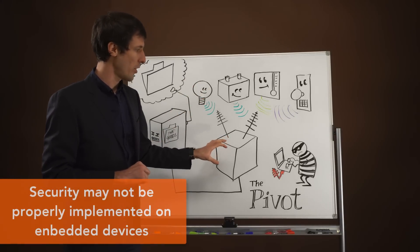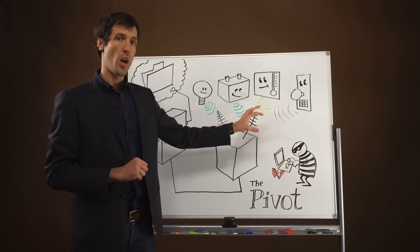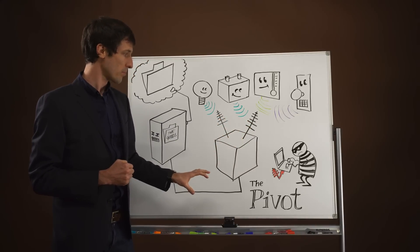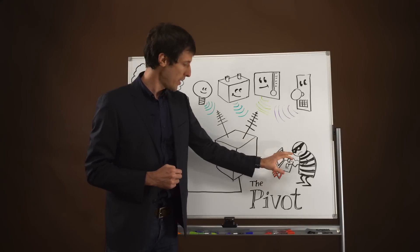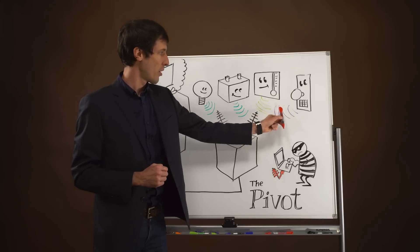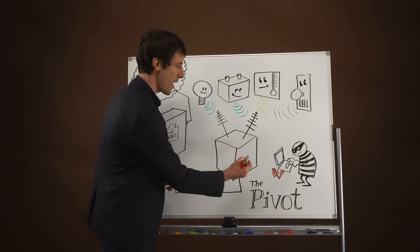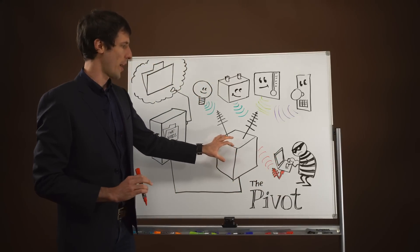In this particular scenario, a motivated attacker has discovered a bug in the implementation of the protocol residing on the hub. They can then attempt to communicate in any one of these protocols, for example Zigbee, and send and receive their own transmissions to the hub.